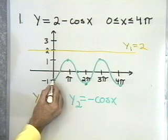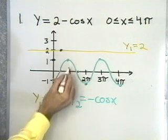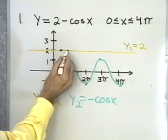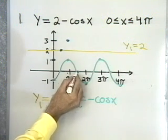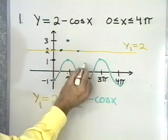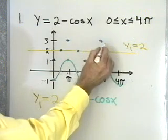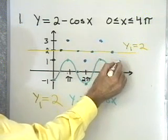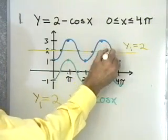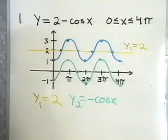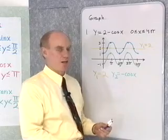Here's negative 1 on the green graph — when I add 2, I end up with 1. Here's 0 — when I add 2, I end up with 2. At π, y is equal to 1 plus 2, that will be 3. Then y is 0 plus 2 is 2. Negative 1 plus 2 is positive 1, and I get 2. Then it goes back up to 3, back down to 2, and then down to 1. The blue graph is the sum of y1 equal to 2 and y2 equal to negative cosine x.